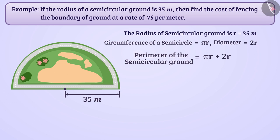By putting all the values in the formula and simplifying it, we get the perimeter of semicircular ground as 180 meter.